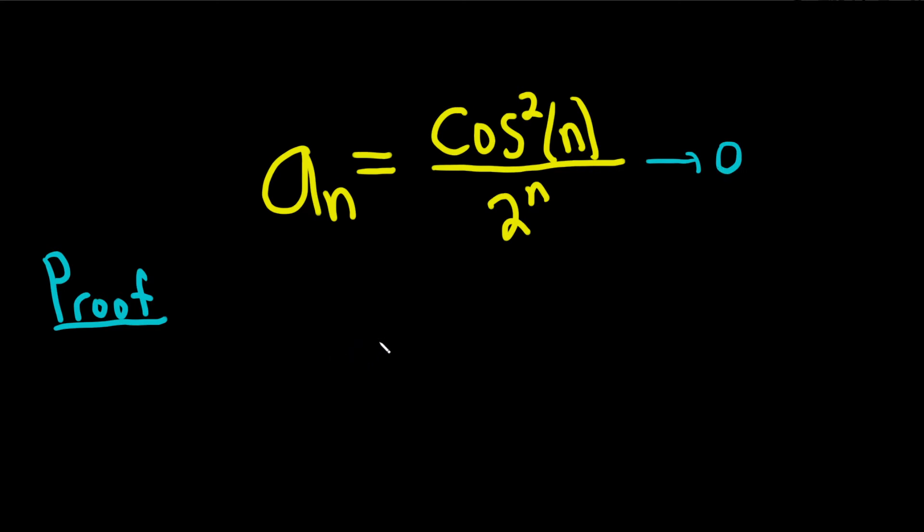So how are we going to prove it? We're going to use something called the squeeze theorem. So we'll start by writing down our sequence: cosine squared of n over 2 to the n.